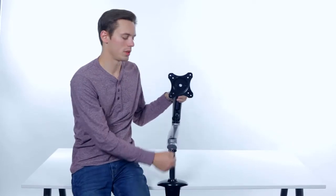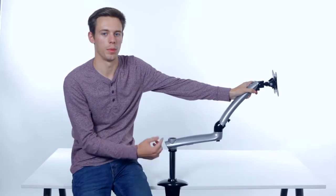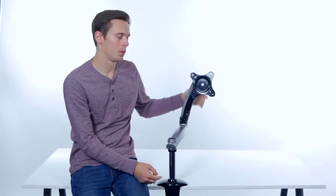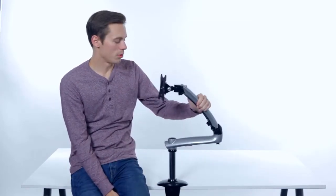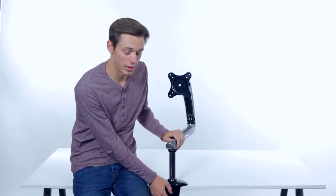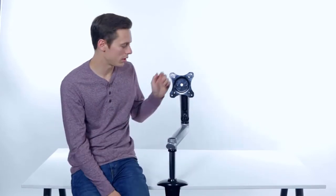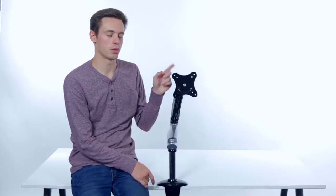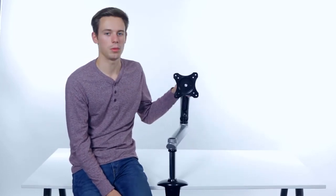The Freedom Arm holds the monitor 14 inches above the work surface and can actually extend it to 24 inches away from the base of the Freedom Arm. It features integrated cable management which keeps the wires and cables for the monitor nice and neat and out of the way. It's also incredibly easy to install. It comes with a grommet mount which you simply slide over the table surface and then screw to hold into place. You simply attach the monitor by placing it over the base plates and using the screw that comes with it.